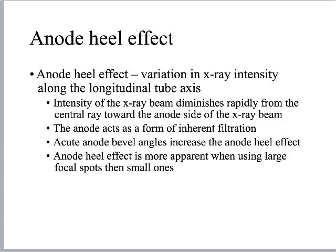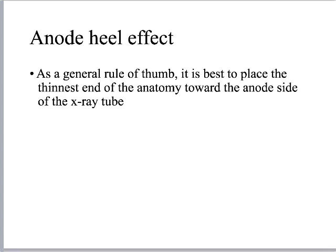For registry purposes, know that the anode acts as a form of inherent filtration and creates a somewhat wedge-shaped x-ray beam. We can use that to our benefit if we're positioning the patient effectively. As a general rule of thumb, it is best to place the thinnest end of the anatomy towards the anode side of the x-ray tube. That's a restatement of the fat cat principle.